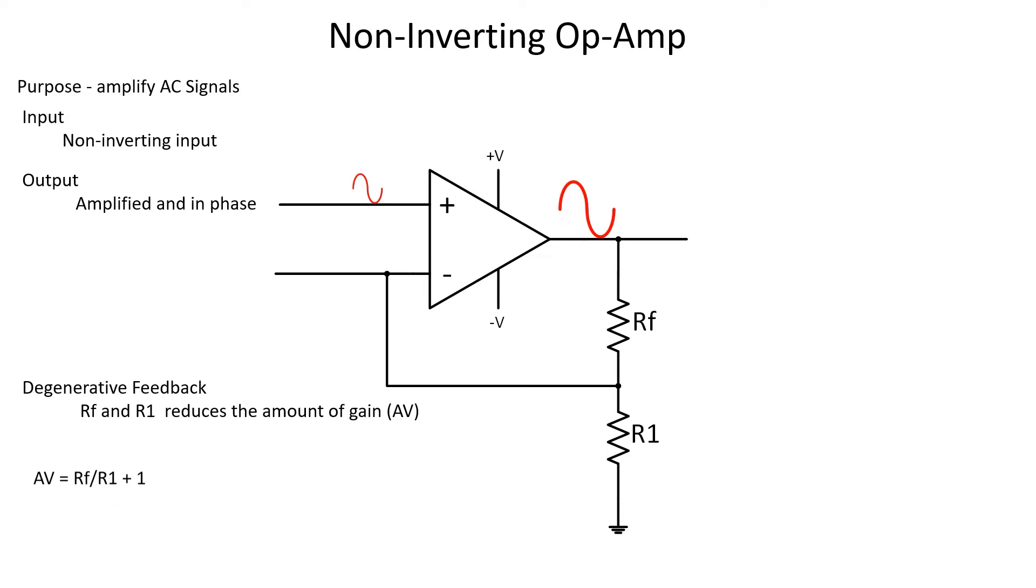AV, or voltage gain, can be calculated using the formula RF divided by R1 plus 1. Oh, and pro tip, make sure not to forget to add the plus 1, and if you get this mixed up with the next op amp we're talking about, look at the symbol where the input's at. The non-inverting input is indicated by a plus sign, a subtle reminder to add that plus 1.